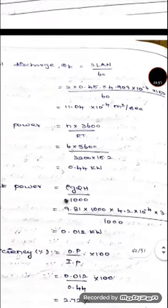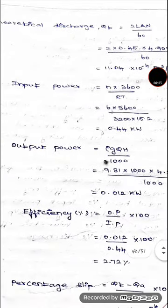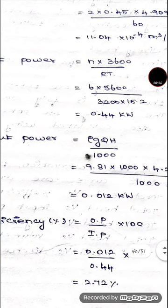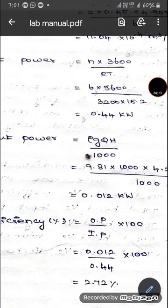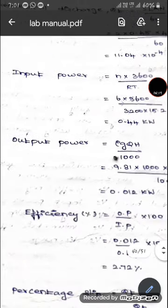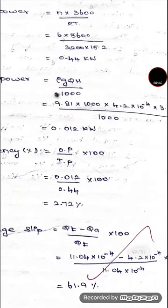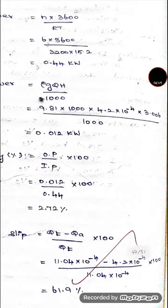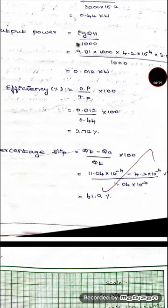The theoretical discharge is calculated using the formula 2L × A × N. The input power is calculated as (number of revolutions × 3600) divided by the energy constant 3200 multiplied by the time taken for the run. Output power is calculated as γ × g × Q × H / 1000, substituting 9810 for γ, with the calculated Q and H values. Efficiency is then the ratio of output power to input power multiplied by 100.